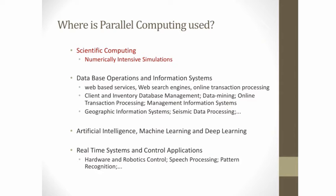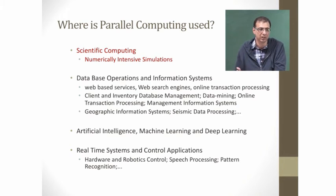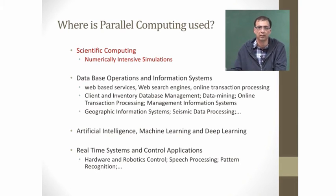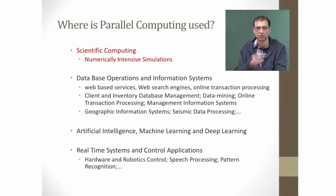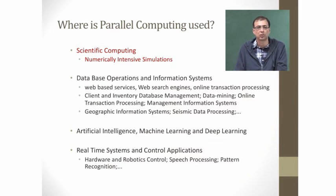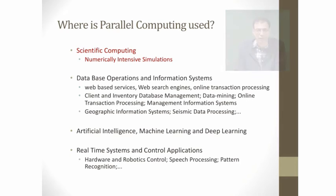Another area is artificial intelligence, machine learning, and deep learning, which are making heavy use of parallel computing. If you look at neural networks, there are lots of nodes receiving inputs, doing some computations, and producing output consumed by other nodes. It is a layered graph and lots of nodes are doing computations in parallel — all of this is very amenable to parallel computing.